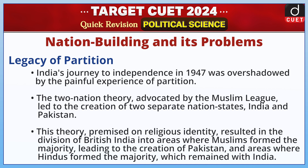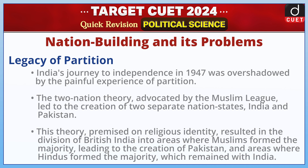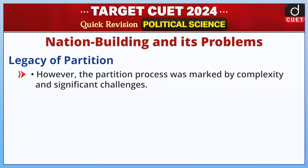India's journey to independence in 1947 was overshadowed by the painful experience of partition. The two-nation theory advocated by the Muslim League led to the creation of two separate nation-states, India and Pakistan. This theory, premised on religious identity, resulted in the division of British India into areas where Muslims formed the majority, leading to the creation of Pakistan, and areas where Hindus formed the majority, which remained with India. However, the partition process was marked by complexity and significant challenges.